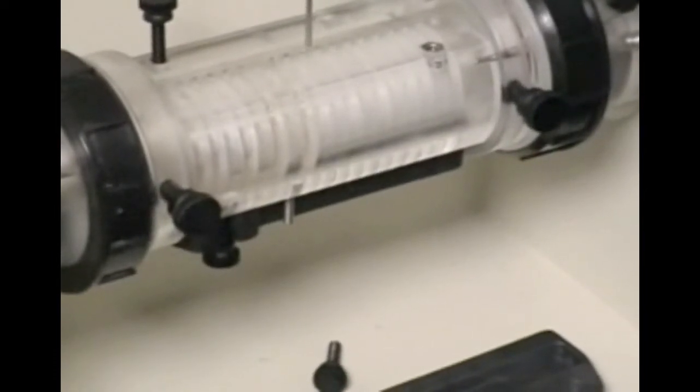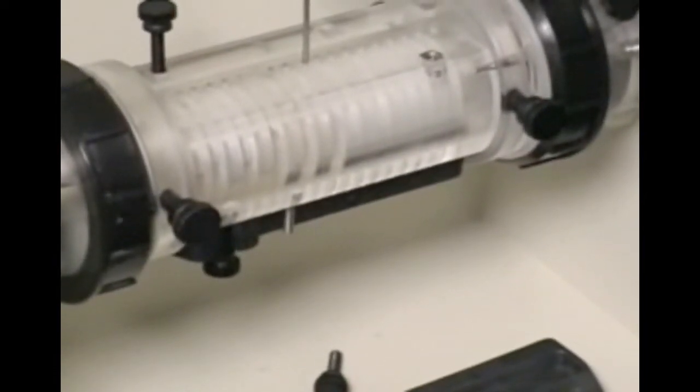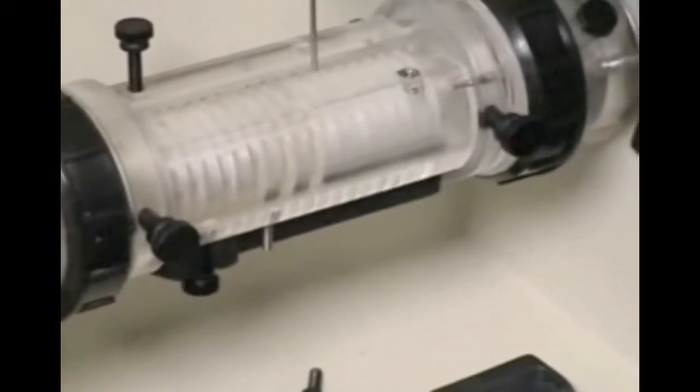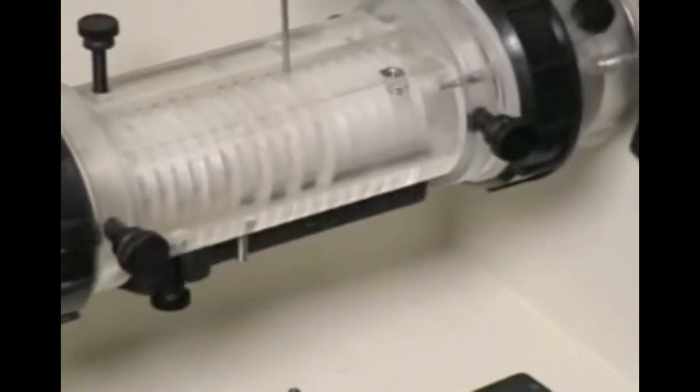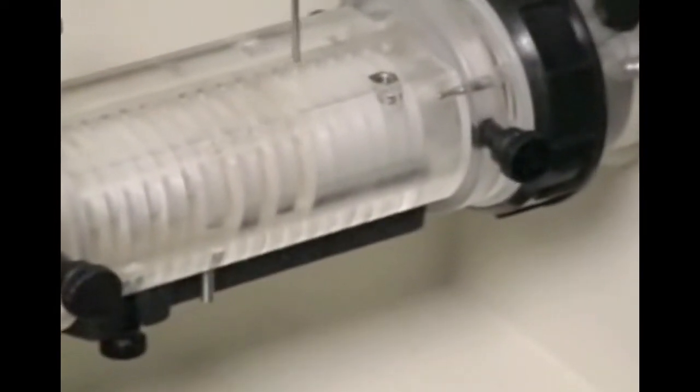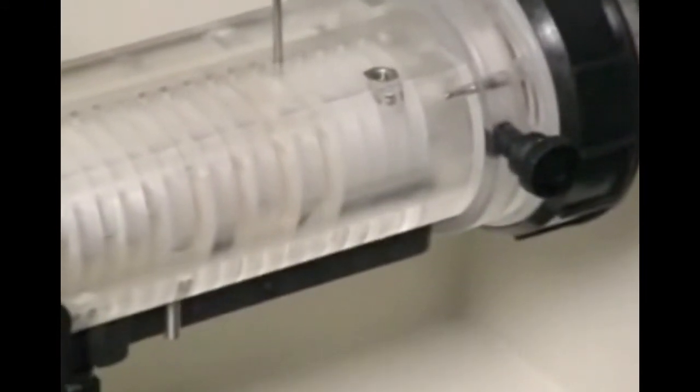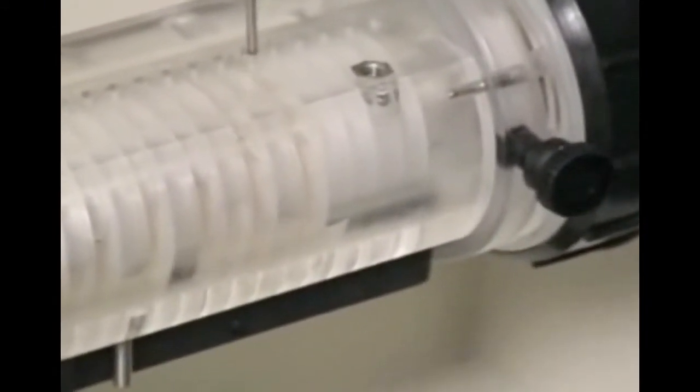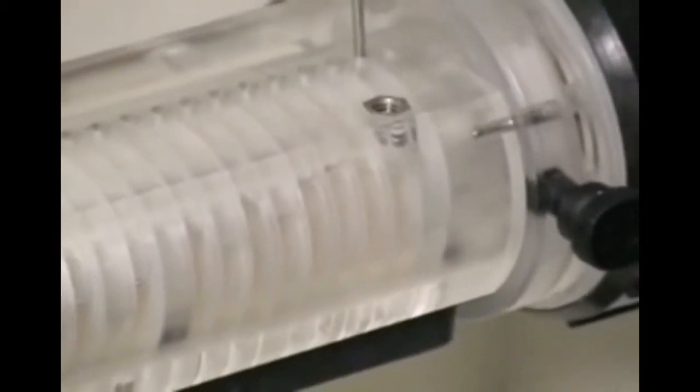For the standard focusing chamber, the minimum sample volume must be sufficient to cover the cooling finger. Generally, 35 milliliters is sufficient. The standard focusing chamber also holds a maximum of about 58 to 60 milliliters of sample. For the mini focusing chamber, always load the maximum sample volume of 18 milliliters.